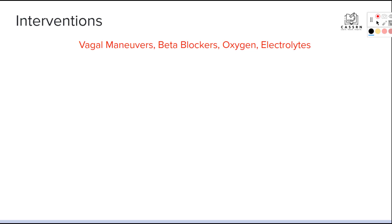Some basic interventions that can be done are vagal maneuvers, beta blockers, oxygen, and electrolytes. Vagal maneuvers increase thoracic pressure and stimulate the vagal nerve, which can slow down the heart. In my seven years running in an ambulance, we saw patients who were using a lot of internal pressure during a bowel movement and they would pass out — or in some cases even pass away — because their heart slowed down and the brain wasn't getting the oxygen it needed.